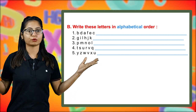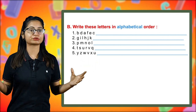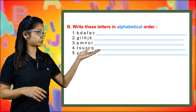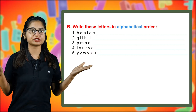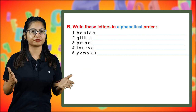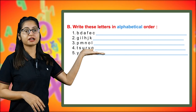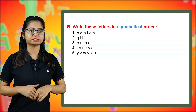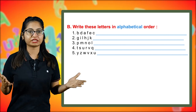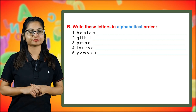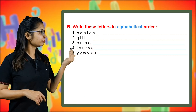Next, V, M, N, O, L, I, O — arrange these in alphabetical order. You are already aware of alphabetical order, so you arrange them. Next you have B, S, U, R, V, Q — arrange in alphabetical order. Next, Y, Z, W, V, X, U — arrange in the correct manner.